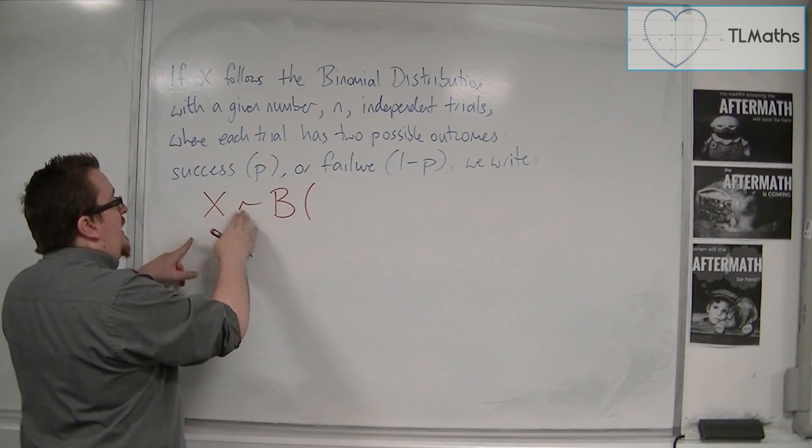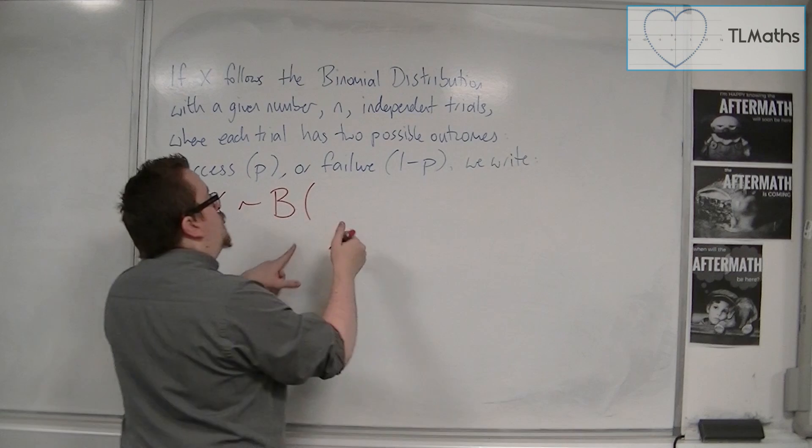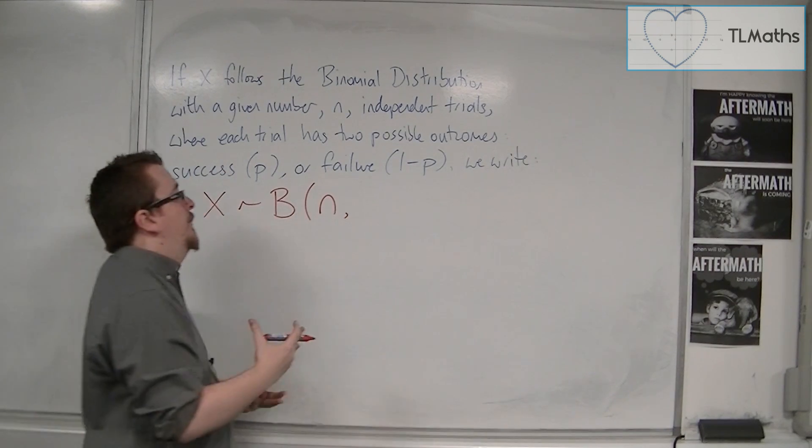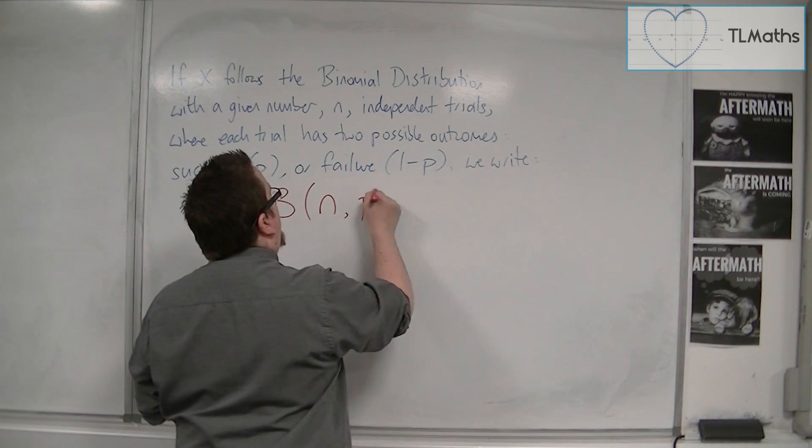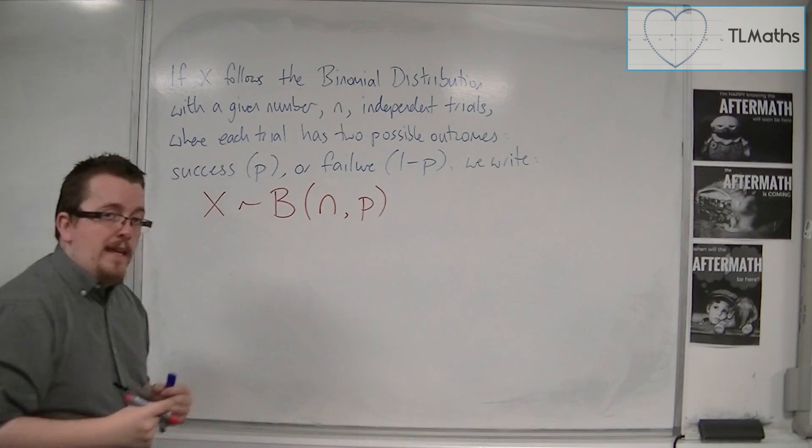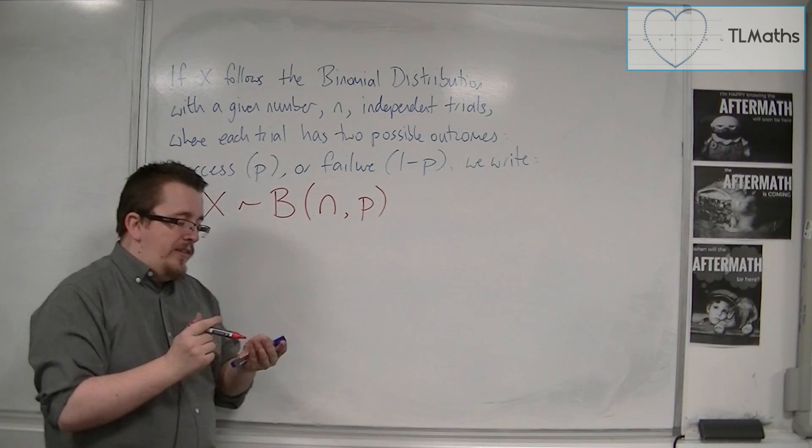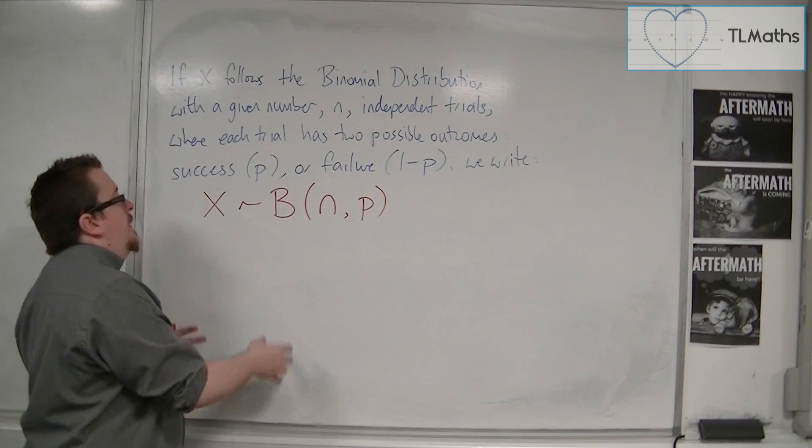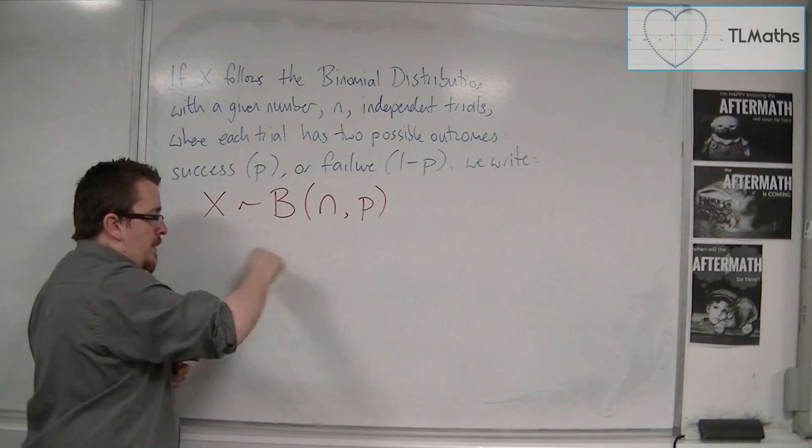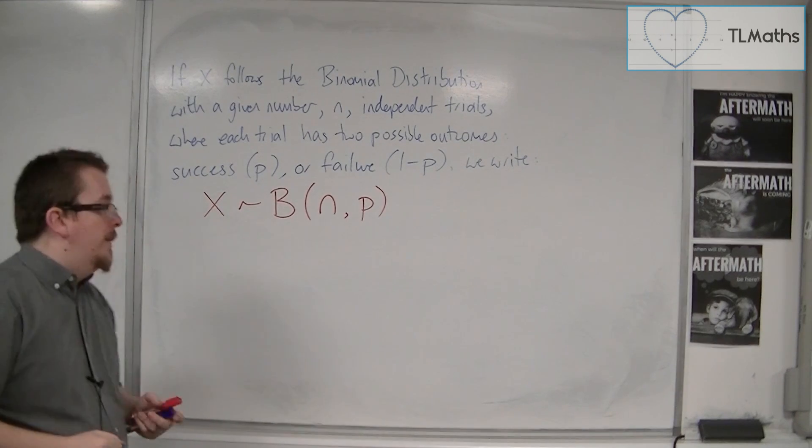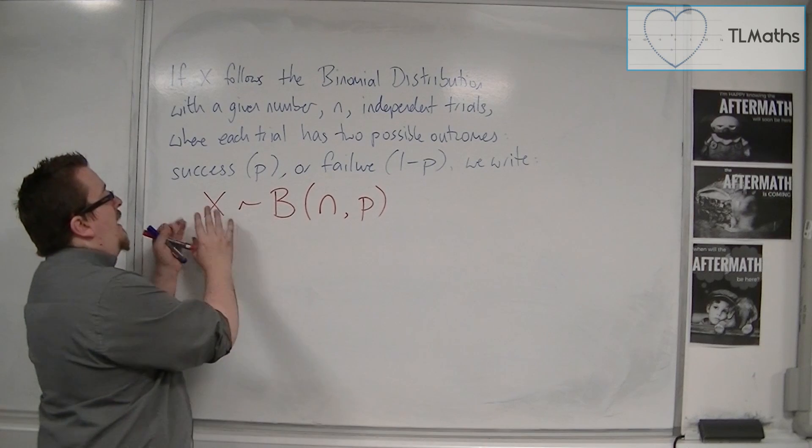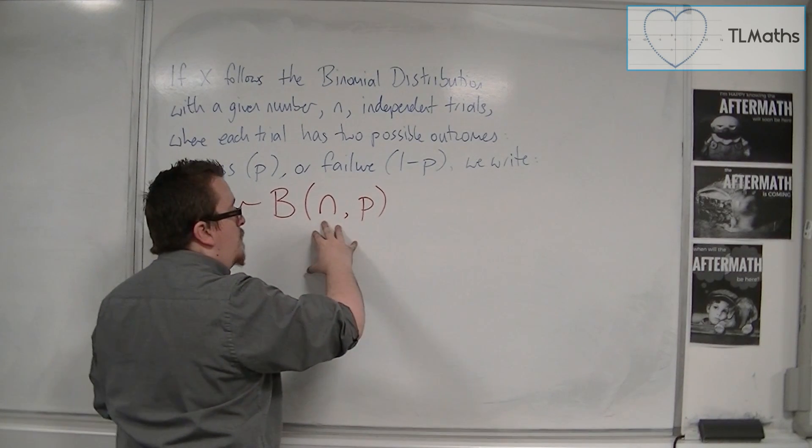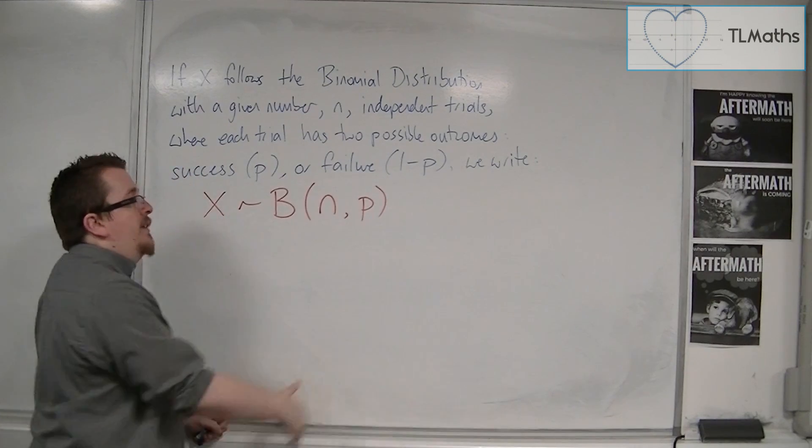X is a binomial distribution with n independent trials with a probability of success p. So when we set up a problem, this is what we want to write down. Now this is a curvy line, a little tilde. It's telling me that X is binomially distributed with n number of trials with a probability of success p.